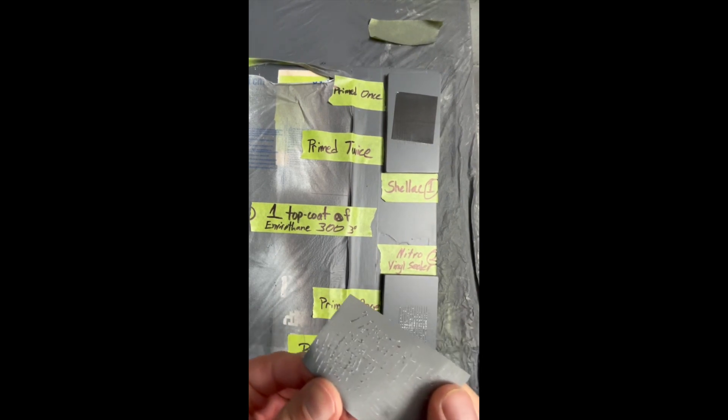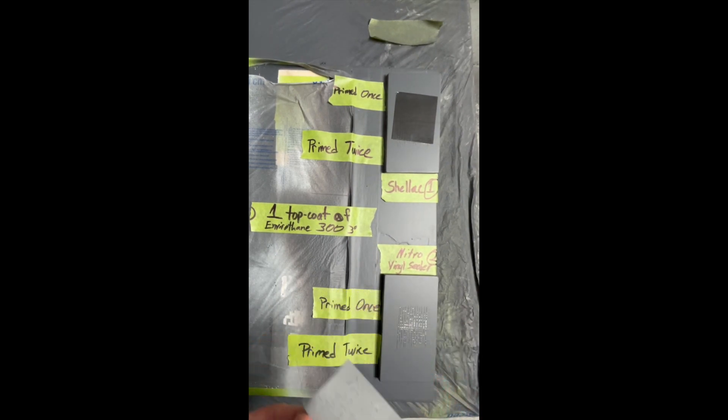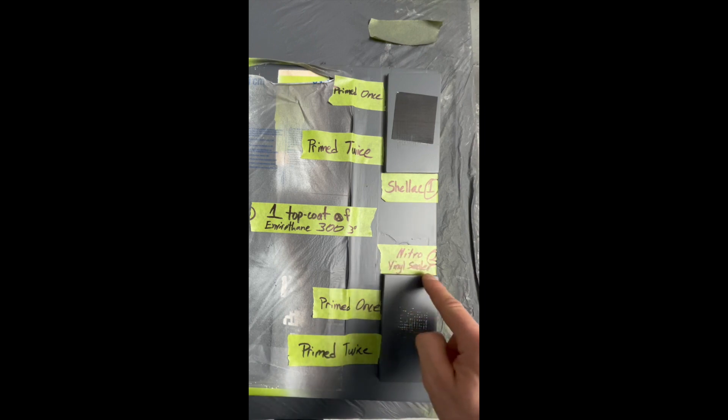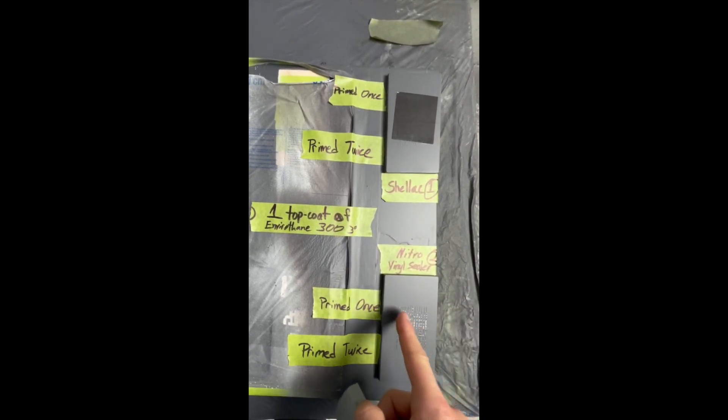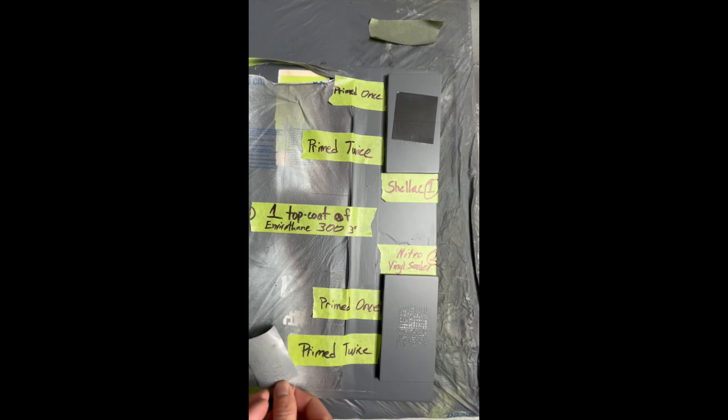The vinyl sealer makes your top coat look more beautiful. I see that the shellac actually gives you a more coarse finish. Whereas the vinyl sealer creates a very smooth and supple foundation for any top coat basically in the market.